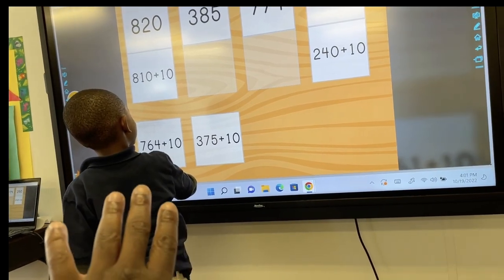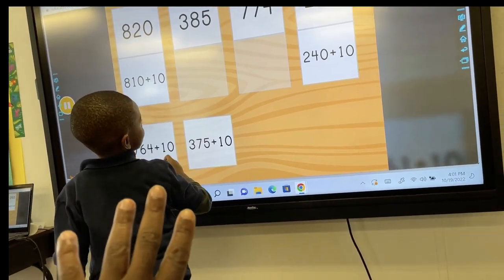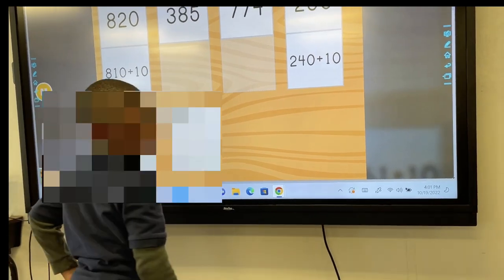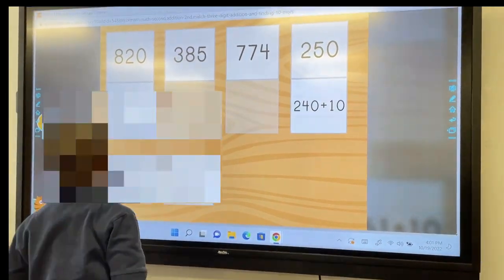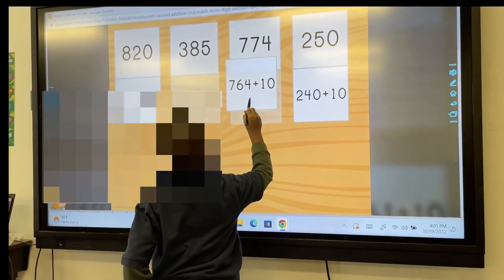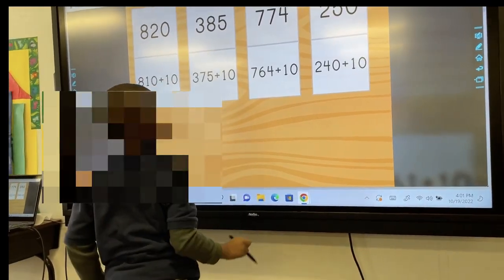764 plus 10. First, tell me what it is. 774. Okay, very good. Okay. Good.